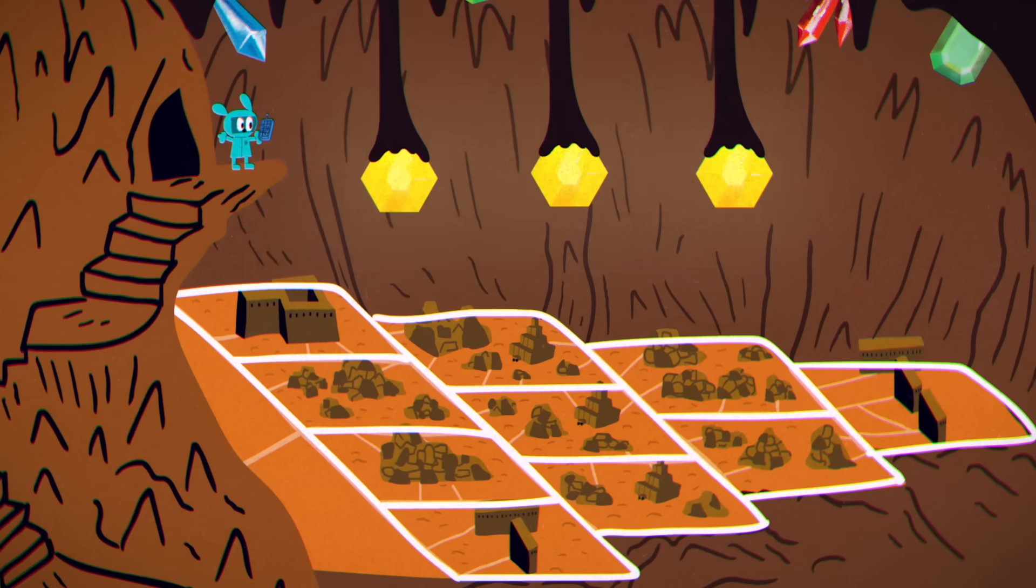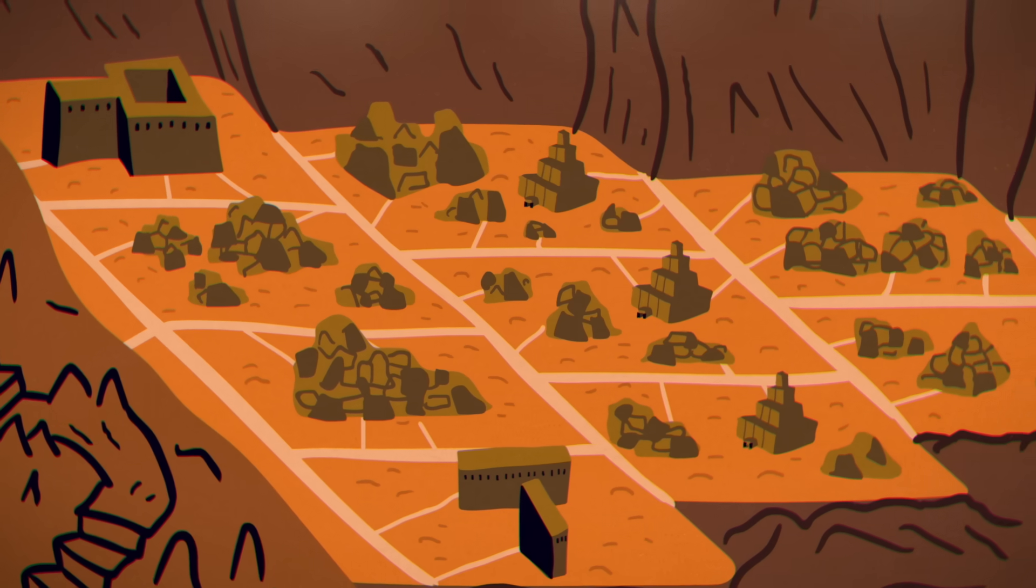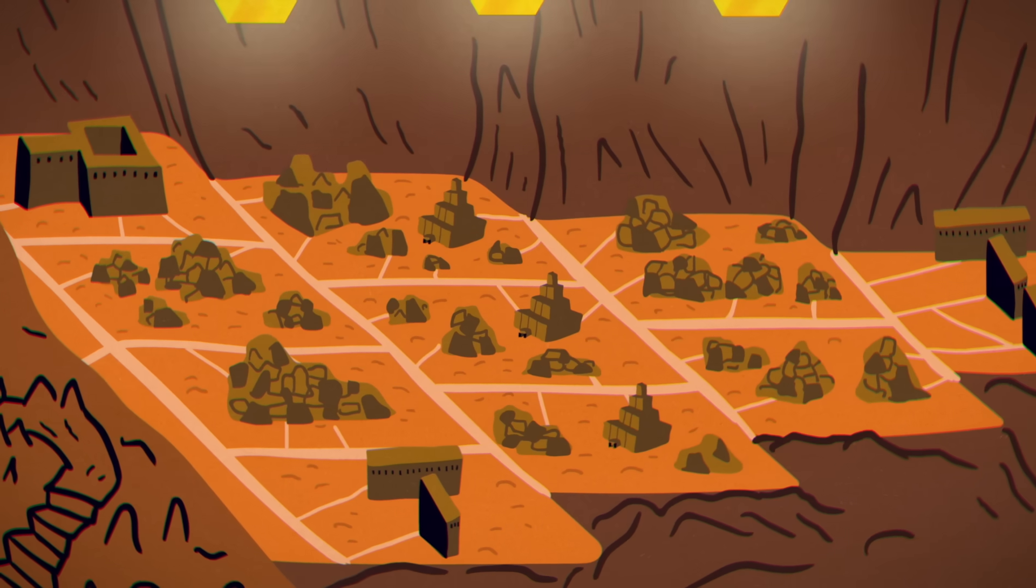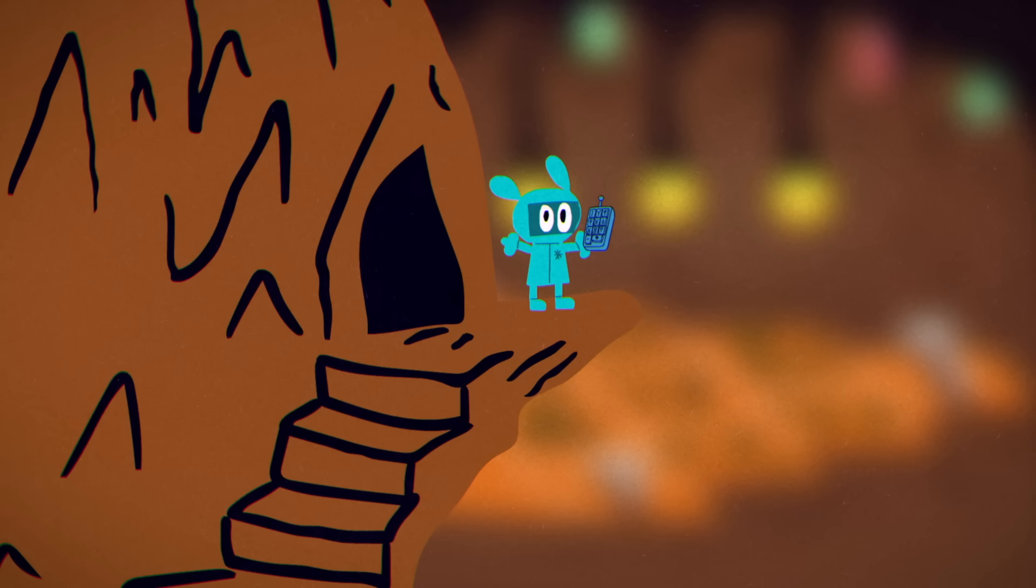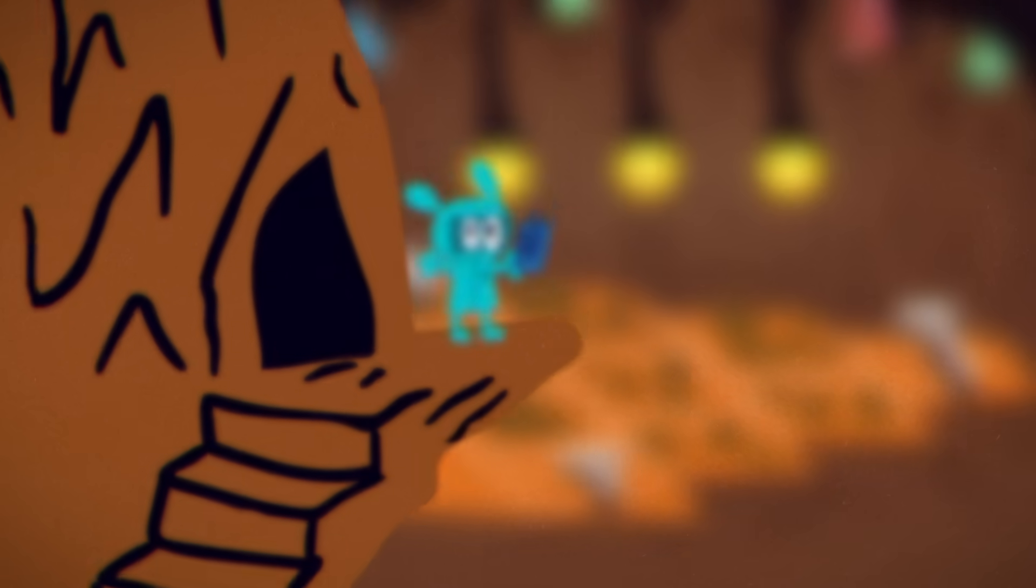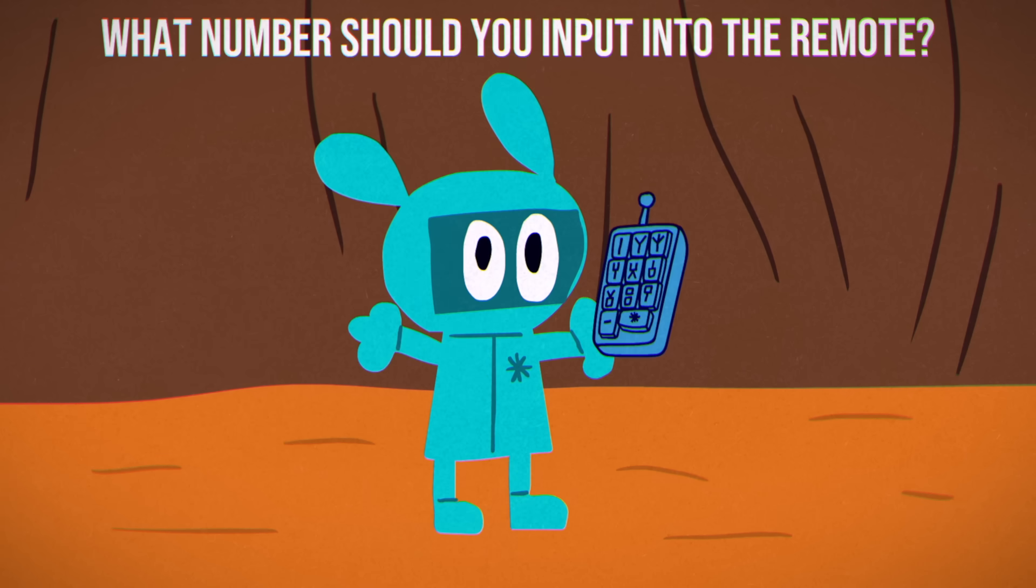A great pyramid, indeed. The city's architects must have designed each district to show a number when viewed from above. But only these three survived the ravages of time. The key once again must be whatever number was in the center plaza. You rush there, but what numbers should you input into the remote?